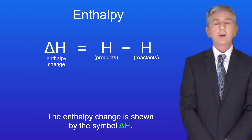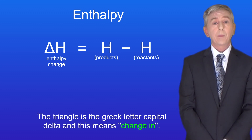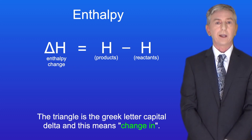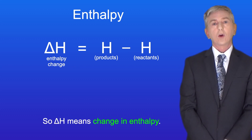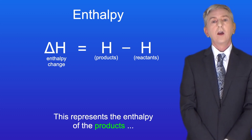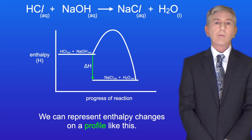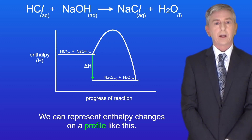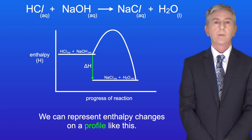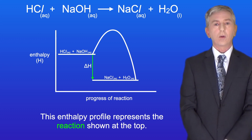The enthalpy change is shown by the symbol delta H. The triangle is the Greek letter capital delta and this means 'change in.' So delta H means change in enthalpy, and this represents the enthalpy of the products minus the enthalpy of the reactants. We can represent enthalpy changes on a profile like this.